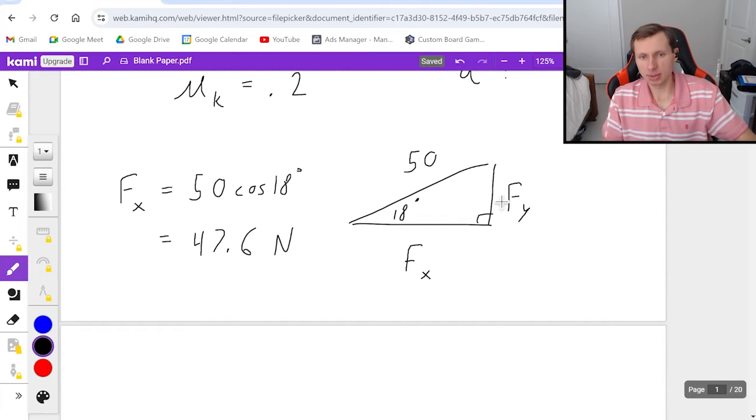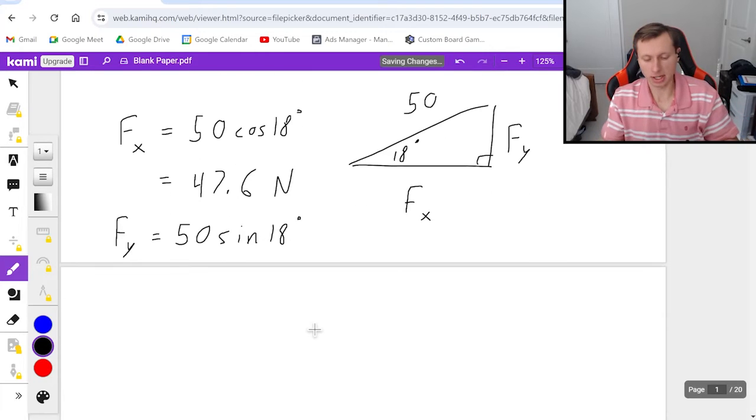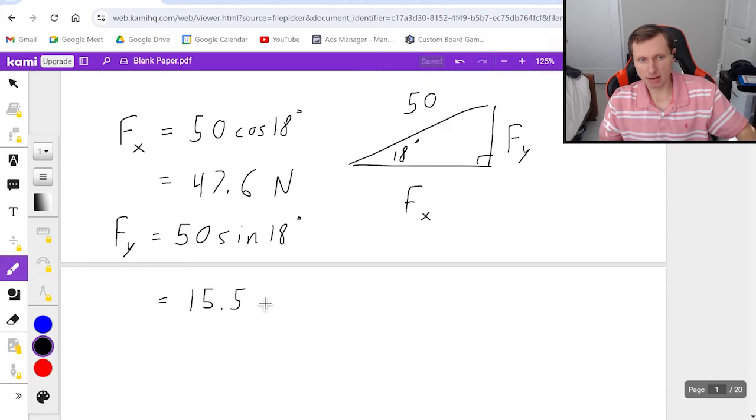And then f_y is going to be almost the same thing, except that's going to use sine because it's the opposite leg. So f_y equals 50 sine of 18 degrees. Plugging that in my calculator, I'll get 15.5 newtons.